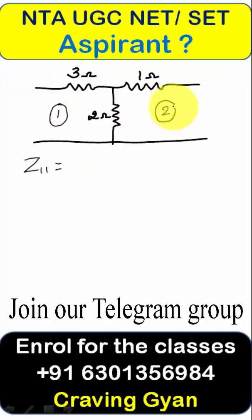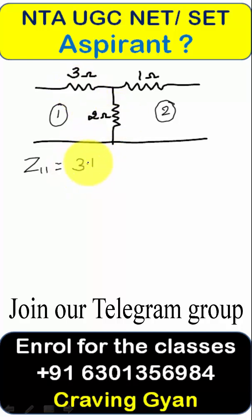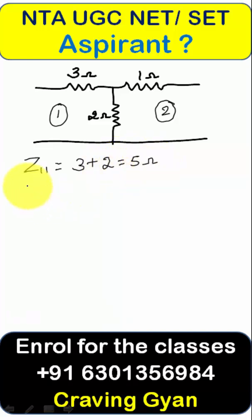Z11 is the input port impedance, that is three plus two ohms, which equals five ohms. Similarly, we have to find the values of Z12, Z21, and Z22.